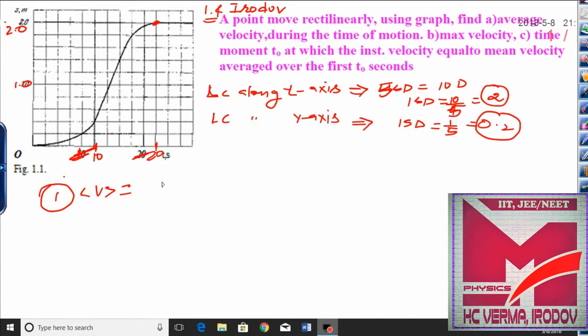When you draw the triangle over here, the perpendicular will be 2 and the base will be 20, and finally you will get 0.1 meters per second. This will be the average velocity in this question.